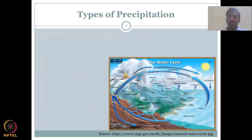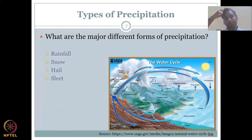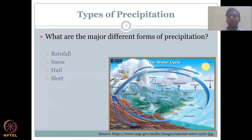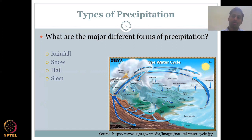Let us get into the types of precipitation. What are the major different types? We do have rainfall — high intensity rainfall or drizzle, very slow rainfall. All of it is included in precipitation. When we say rainfall measurements, it includes your high rainfall events, slow rainfall events, and drizzles. Some dew is also considered in the rainfall measurement because when you measure overnight, you may not know if it is rainfall or dew formation in your rain gauge.